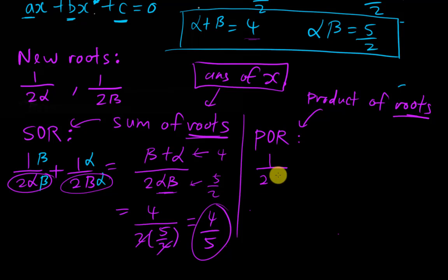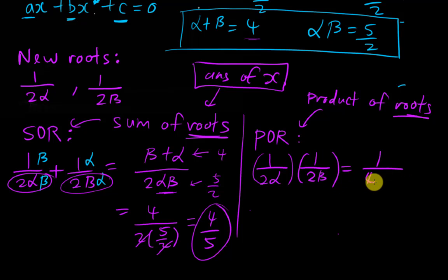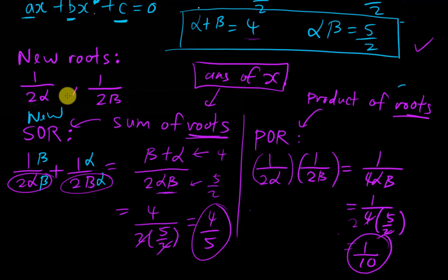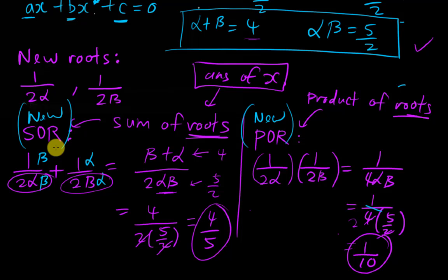Now for the product of roots: multiply the two new roots together — 1 over 2 alpha times 1 over 2 beta — giving 1 over 4 alpha beta. I know alpha beta equals 5 over 2, so substituting gives 1 over (4 × 5/2) which simplifies to 1 over 10. This is the new product of roots.